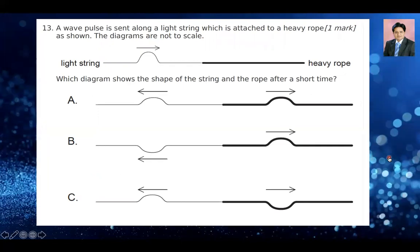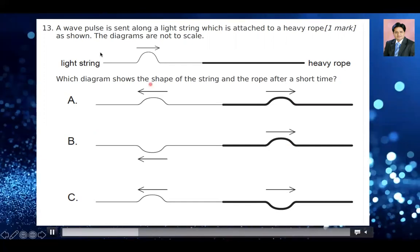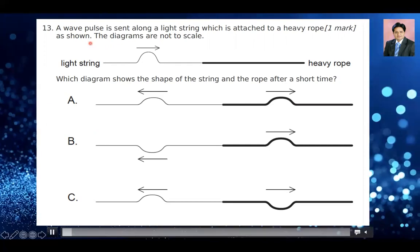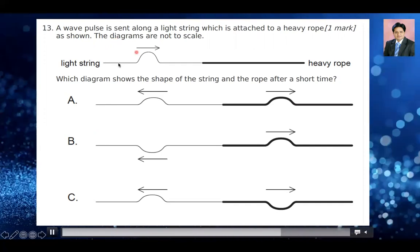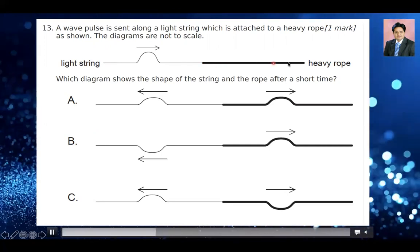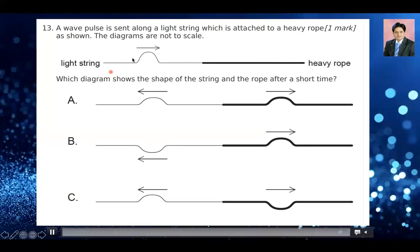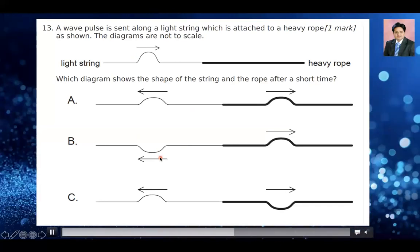Question number 13 is about wave reflection from a fixed end and from a free end. A wave pulse is sent along a light string which is attached to a heavy rope. The heavy rope acts as a fixed end. As the wave reaches the boundary, there is a reflection, but the reflection undergoes 180 degrees out of phase. There is also a transmission of the wave. So there is transmission and reflection, and the reflection is out of phase. Option D is the right answer.